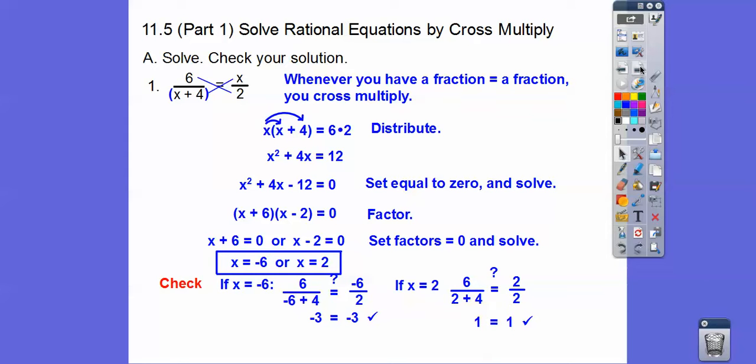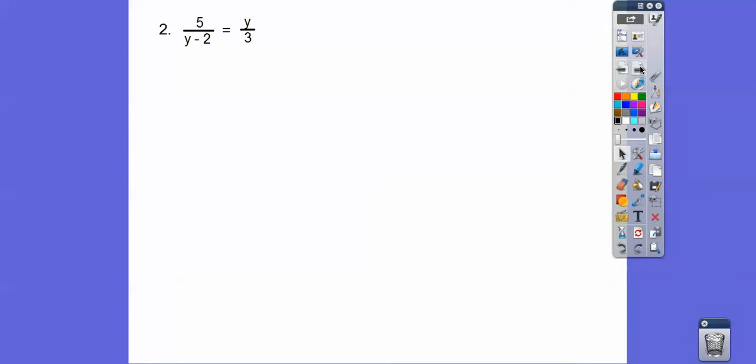Sometimes you'll find out 1 or 2 of them won't check out. So it's good to check your answers. Let's try another one just like that. Cross multiply. Subtract 15 from both sides. Make it equal to 0.